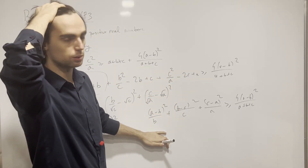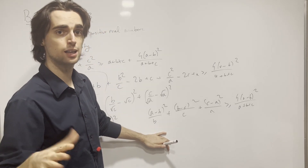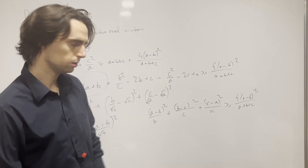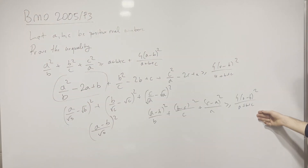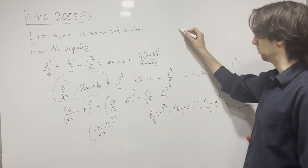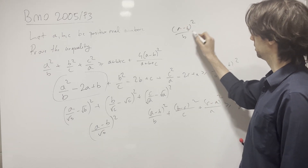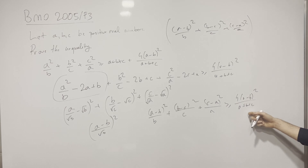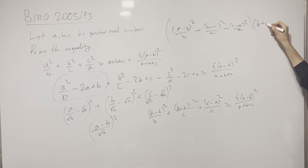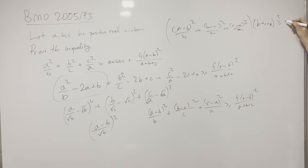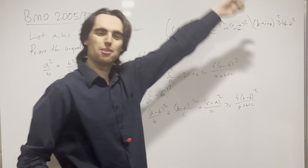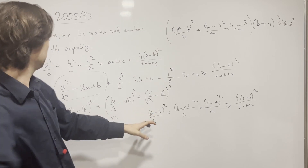I invite you to pause for the next 15 minutes and try to push this problem further. Here's the next step: wait a second — these are squares, these are all real numbers. This is true if and only if (a−b)²/b + (b−c)²/c + (c−a)²/a times (a+b+c) is greater than or equal to something. This is like a question mark for (a−b)². What does this remind you of? Pause for three minutes.